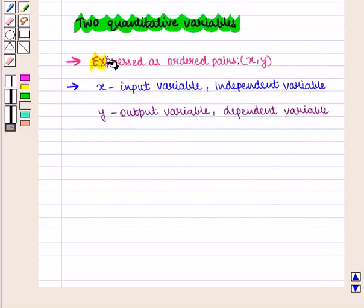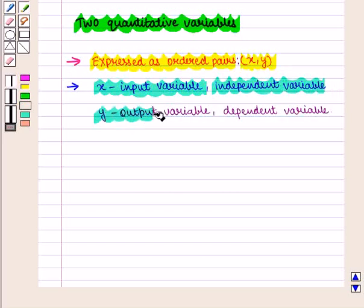These variables are expressed as ordered pairs, that is in the form of the ordered pair (x, y), where x is the input variable which is independent, and y is the output variable, that is the dependent variable.